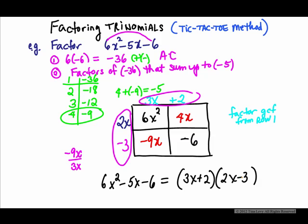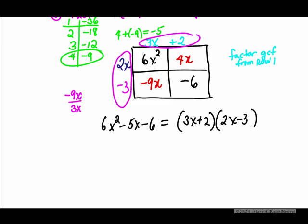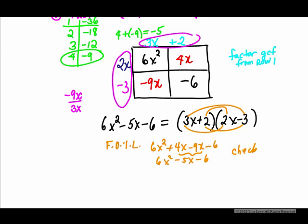One good thing to do is to do a check by foiling. So if you foil it, you get 3x times 2x, 6x². 2 times 2x, 4x, minus 3 times 3x, -9x, -6. And sure enough, that's our 6x² - 5x - 6. So you did a nice check. And that's something that one can easily do to make sure you did it correctly.